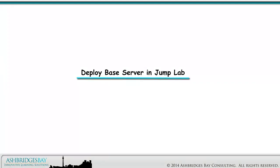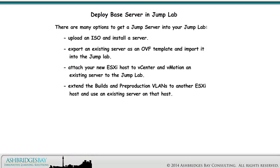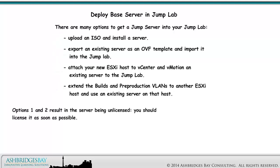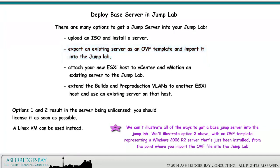First, we need to deploy the base server in the Jump Lab. There are many options to get a Jump Server into your Jump Lab: upload an ISO and install a server; export an existing server as an OVF template and import it into the Jump Lab; attach your new ESXi host to vCenter and vMotion an existing server to the Jump Lab; or extend the builds and pre-production VLANs to another ESXi host and use an existing server on that host. Options 1 and 2 result in the server being unlicensed — you should license it as soon as possible. A Linux VM can be used instead. We'll illustrate Option 2 with an OVF template representing a Windows 2008 R2 server, from the point where you import the OVF file into the Jump Lab.